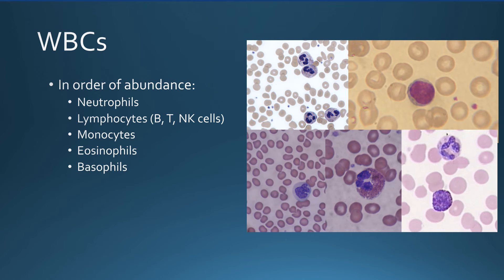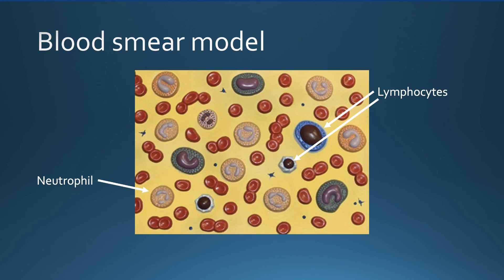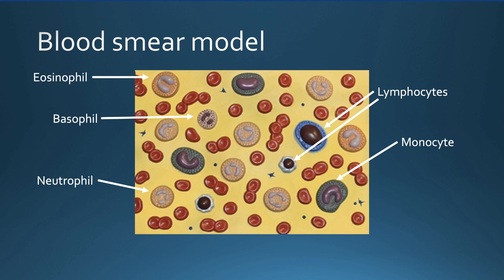You should be able to identify the five types of white blood cells from images. Here is a model used to demonstrate the differences in the laboratory. Neutrophils are granulocytes easily identified by their granules and multi-lobed nucleus. Lymphocytes have a large nucleus that fills almost the entire cell. Monocytes are about 50% larger than other white blood cells and have a U-shaped nucleus. Eosinophils have a two-lobed nucleus resembling two kidney beans and many granules. Basophils have so many granules that you often cannot see the nucleus at all.